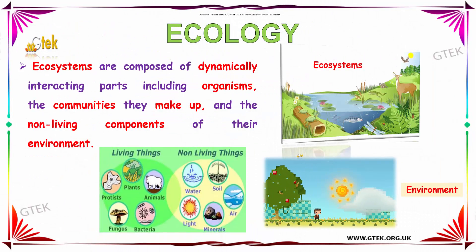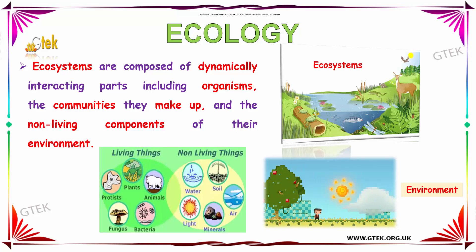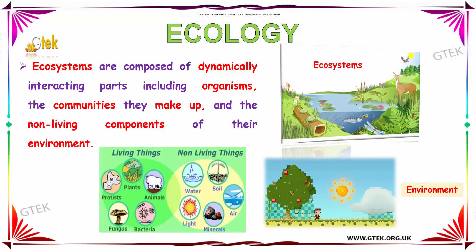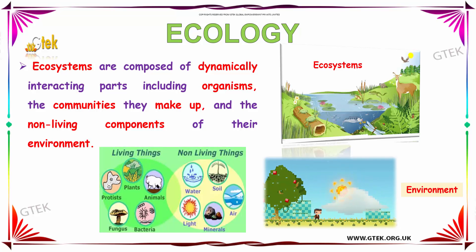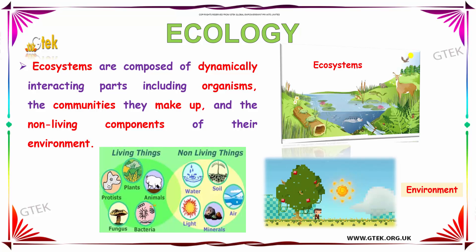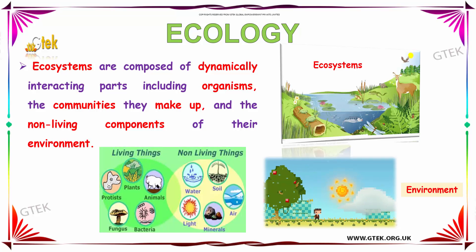Let us discuss about Ecology. An ecosystem is composed of dynamically interacting parts including organisms, the communities they make up, and the non-living components of their environment. You can see the ecosystem over here, showing organisms, communities, and non-living components, as well as living things, non-living things, and the environment.